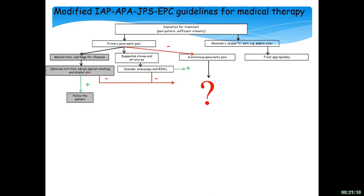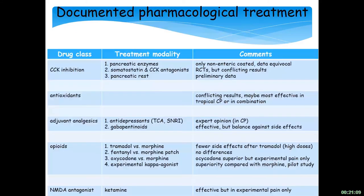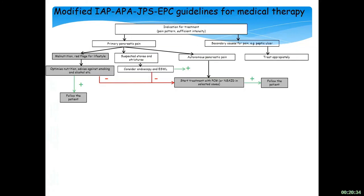We have a lot of different drugs that have been shown to have an effect in chronic pancreatitis. Some are proven in RCTs, some in open studies or case series. There is rather good indication that CCK inhibition, antioxidants, and adjuvant analgesics — as shown, with pregabalin — and also opioids and NMDA antagonists in experimental studies can have an effect on pancreatic pain. So we have an armamentarium to use in treatment of these patients.